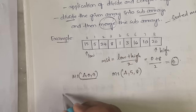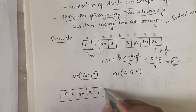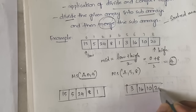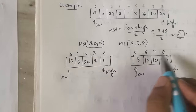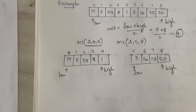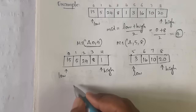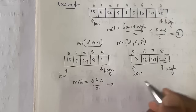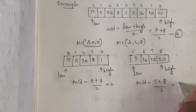The first subarray A[0..4] contains elements 15, 5, 24, 8, 1, and the second subarray A[5..8] contains 3, 16, 10, 20. We recursively divide further. For A[0..4]: mid = (0+4)/2 = 2. For A[5..8]: mid = (5+8)/2 = 6.5, rounded down to 6. This gives subarrays A[0..2], A[3..4], A[5..6], and A[7..8].